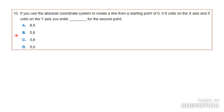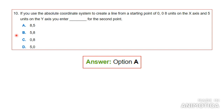Number ten: if you use the absolute coordinate system to create a line from starting point 0,0 to 8 units on the x-axis and 5 units on the y-axis, what do you enter for the second point? The answer is A — you're creating a shape that is 8 units across on the x-axis and 5 units up on the y-axis. You go 8 across and 5 up to complete the rectangle, so you enter 8 and 5.